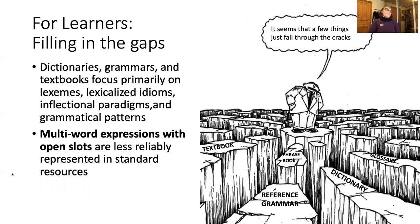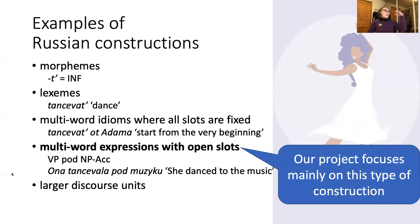For learners, they of course have access to lots of different resources like textbooks, grammars, and dictionaries. But there are certain kinds of constructions that are less reliably represented in these standard resources — in particular, these multi-word expressions that have open slots. This is where we have primarily targeted our Russian Constructicon. Somewhere in between 'constructions all the way up or all the way down' are these multi-word expressions with open slots. For example, a verb phrase with 'under' plus accusative — that's how you say 'she danced to the music' in Russian using 'under,' which is non-transparent, at least for learners.